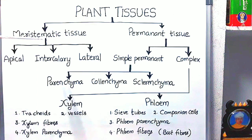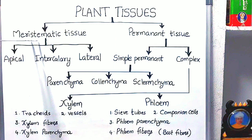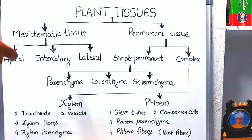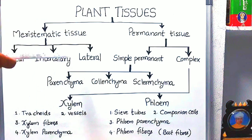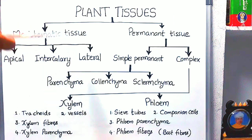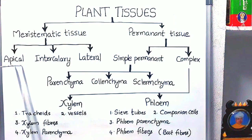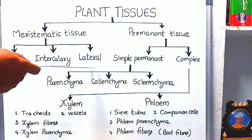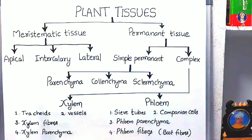We can see mainly two types of tissues: meristematic tissue and permanent tissues. Meristematic tissues are called dividing tissues, meaning the cells present in this tissue are actively dividing cells. These tissues divide and form new organs in the plant body. Depending upon the location, they are classified into three categories: apical meristem, intercalary meristem, and lateral meristem.